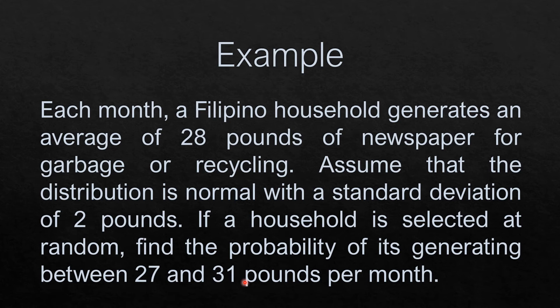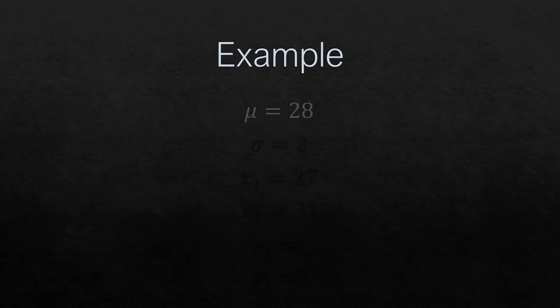The first thing that we need to do is to transform these two values for the random variable into its corresponding Z-score. Let us identify the mean, that is 28.